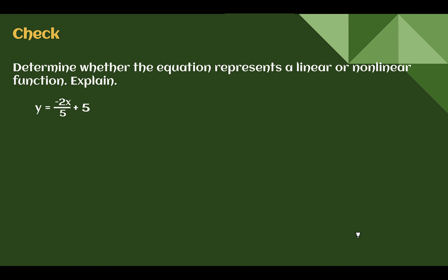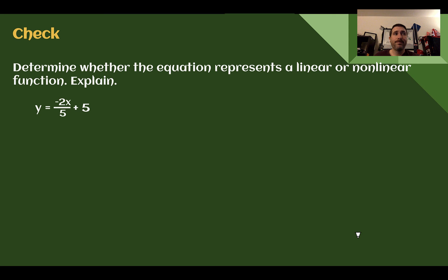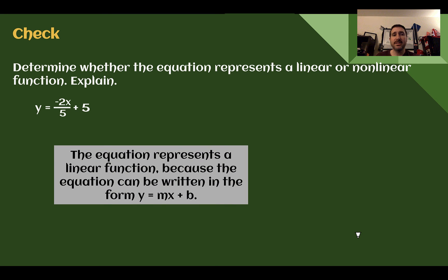Check your understanding: this is a linear function. It can be written as y = mx + b — specifically y = (-2/5)x + 5. There are no exponents, x and y are not in the bottom of a fraction, there are no roots, and x and y are not multiplied together. Those are the things that make non-linear. The slope is negative two-fifths and the y-intercept is 5.